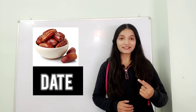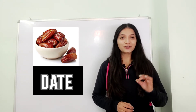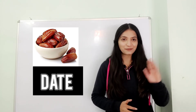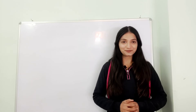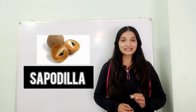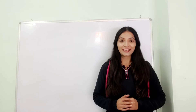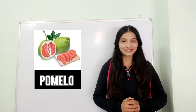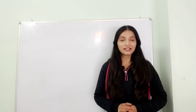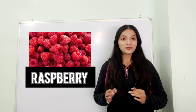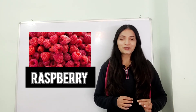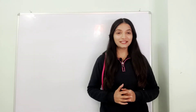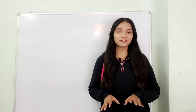Interestingly, the word 'date' also refers to a calendar date — same spelling, but in English, Khajur is called date. Next fruit is Chiku — Chiku is called Sapodilla. Next fruit is Chakotra — Chakotra is called Pomelo. Next fruit is Raspberry — Raspberry is the same in English, just with a slightly enhanced pronunciation, like raspberry. Now these were the names of certain fruits that are easily available in the market.